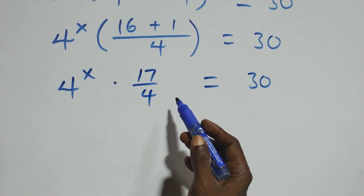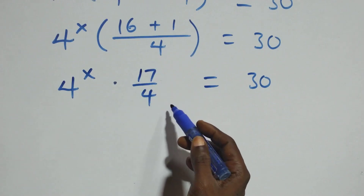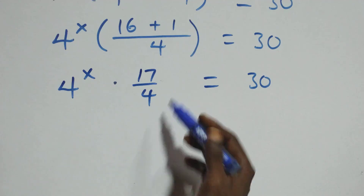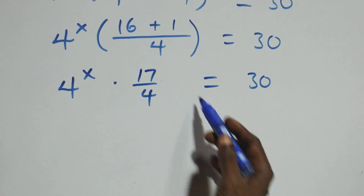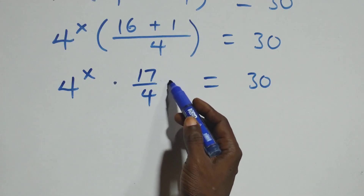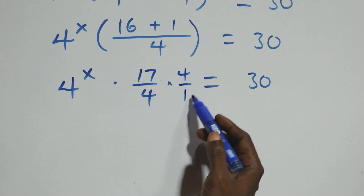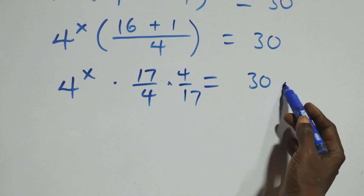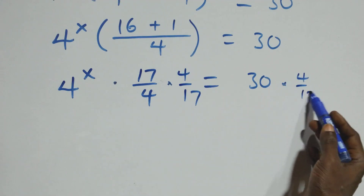Next step: let's remove 17 over 4 by multiplying by the reciprocal. We multiply both sides by 4 over 17 — this side by 4 over 17, and this side also by 4 over 17.